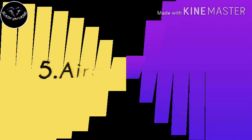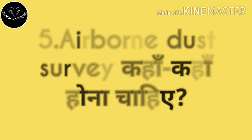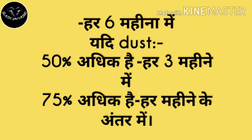Airborne dust survey कहाँ-कहाँ और कब होना चाहिए? हर 6 महीने में airborne dust survey किया जाए। लेकिन अगर DGMS का अनुपात 50% से अधिक हो जाए तो हर 3 महीने में, और 75% से अधिक हो जाए तो हर महीने के अंतराल में करना होगा।